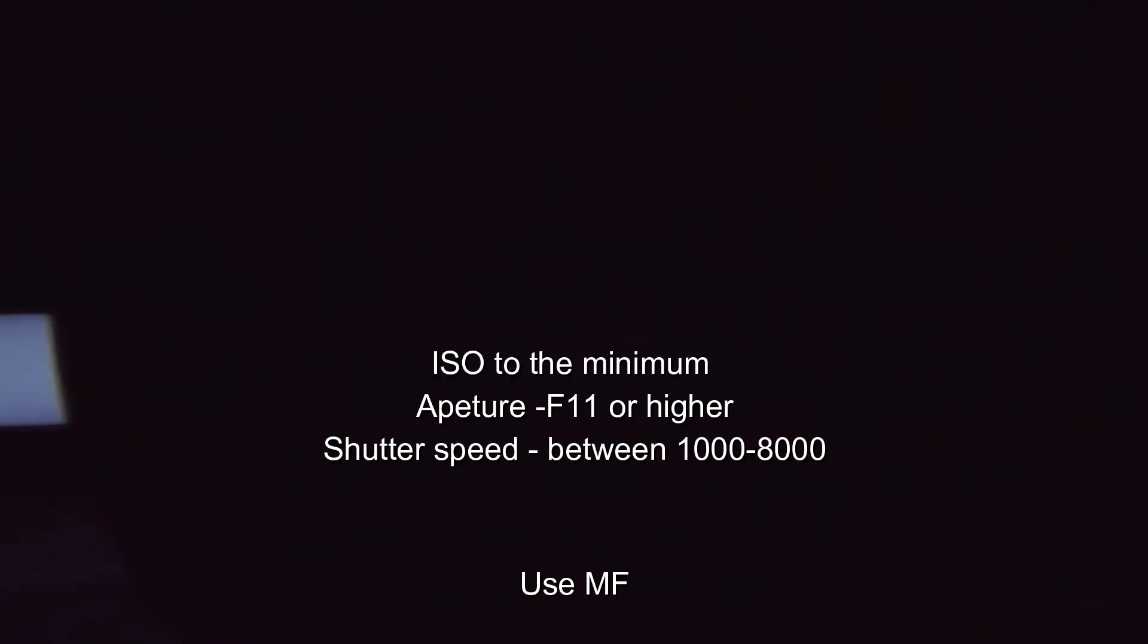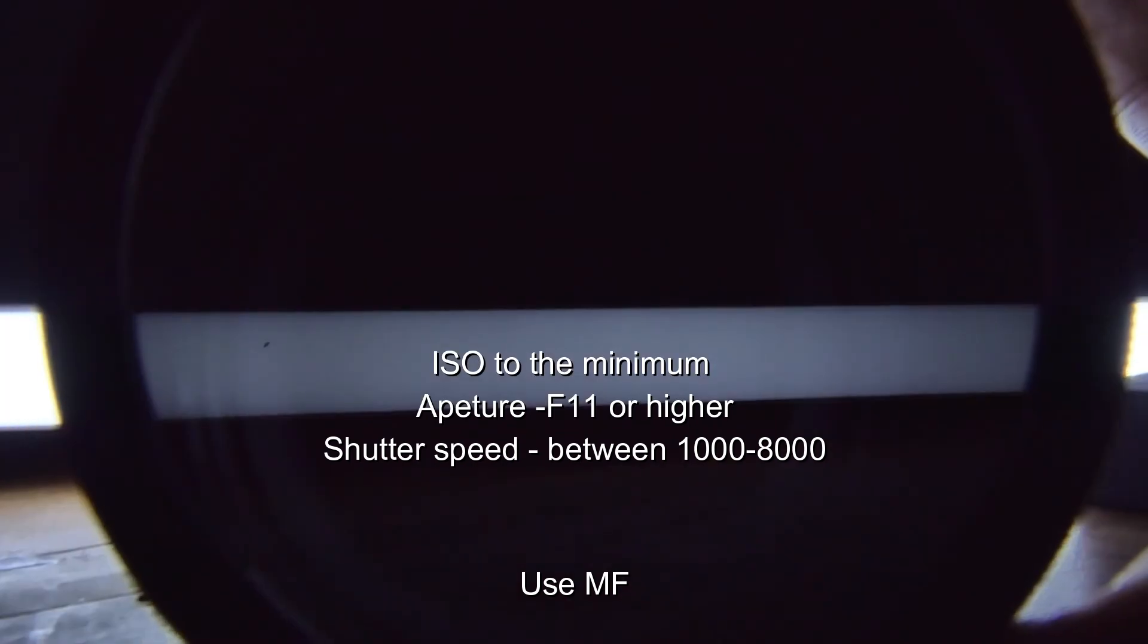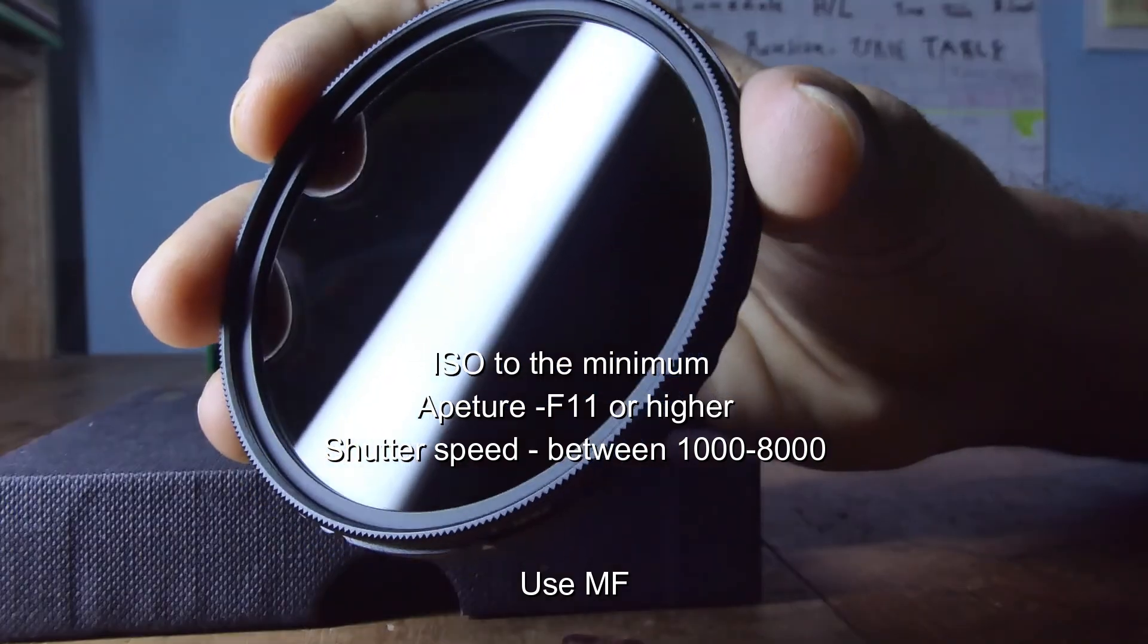Now to the camera settings: lower the ISO to the minimum, set the aperture to the max, f/11 or higher, and set the shutter speed till you see the desired brightness over the scene. And specially use manual focus and adjust it after the filter is applied to the lens.